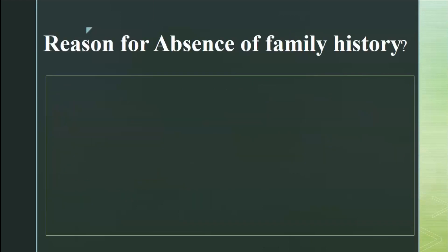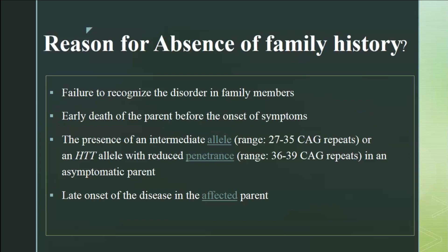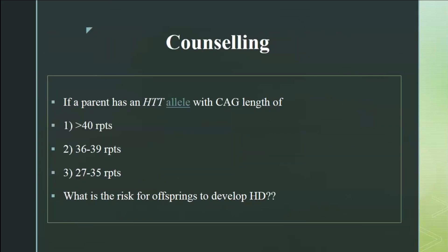Sometimes Huntington's disease will look like a simplex case with no family history. This can occur because it is a triplet repeat disorder with anticipation — the disorder may not have been recognized in the family — or another parent may have expired before symptom onset, or it can be due to reduced penetrance or late onset of disease. Many factors must be considered when there is no family history.